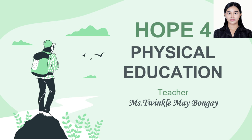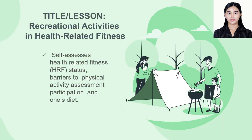Let me introduce our first lesson for HOPE4. We have Recreational Activities in Health-Related Fitness. Our main objective for this unit: we are going to self-assess health-related fitness status, barriers to physical activity assessment, participation, and one's diet.